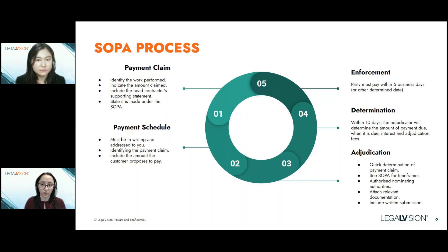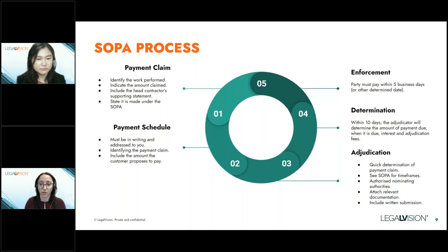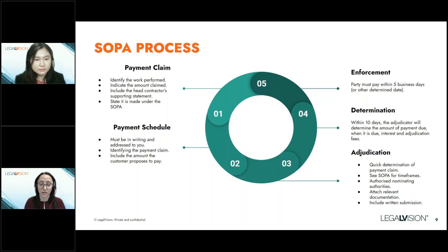Some tips when preparing a payment claim: include as many supporting documents as possible, such as statements detailing the extent of work completed, completion certificates, delivery dockets, photographs, or any other contractual documentation required. Also, especially where it is a large contract with many different parties, make sure that you send it to the right person or entity — check the contract to see who you've contracted with and direct it to that person.